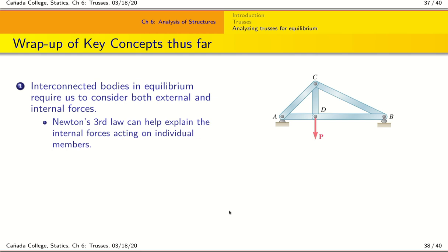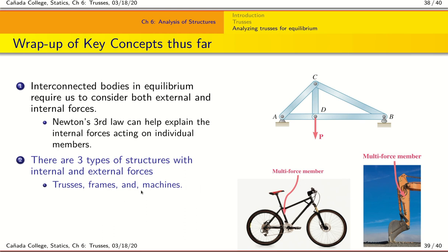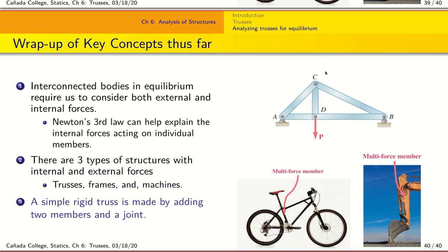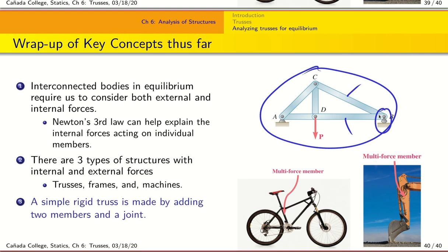Let's wrap up today's discussion. We learned that interconnected bodies in equilibrium require us to consider both external and internal forces, and Newton's third law helps explain the internal forces on individual members. We covered the three types of structures: trusses, multi-force member frames, and machines. A simple rigid truss is made by starting with one triangle and adding two members and one joint repeatedly. Please go through the material, pause at each section, and work through the exercise problems to reinforce what we've covered today.